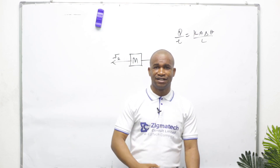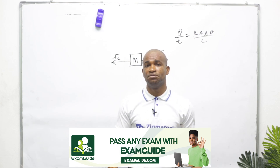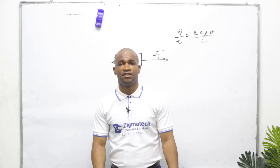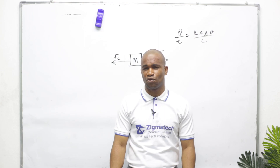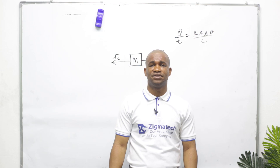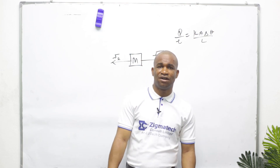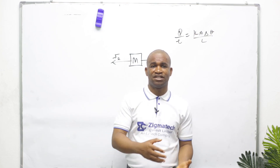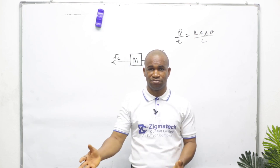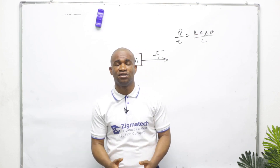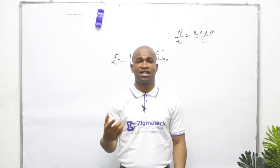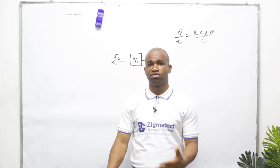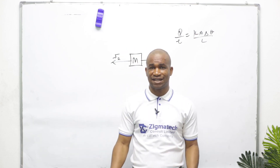In optics, for lenses you need to be proficient with the Real-Is-Positive (RIP) convention or the New Cartesian convention for lens formulas. Under refraction, we also cover Newton's dispersion of white light, the electromagnetic spectrum, behavior of light moving between media, critical angle, total internal reflection, and rectangular and triangular prisms. Under reflection, we cover the number of images formed when two mirrors are inclined at an angle.